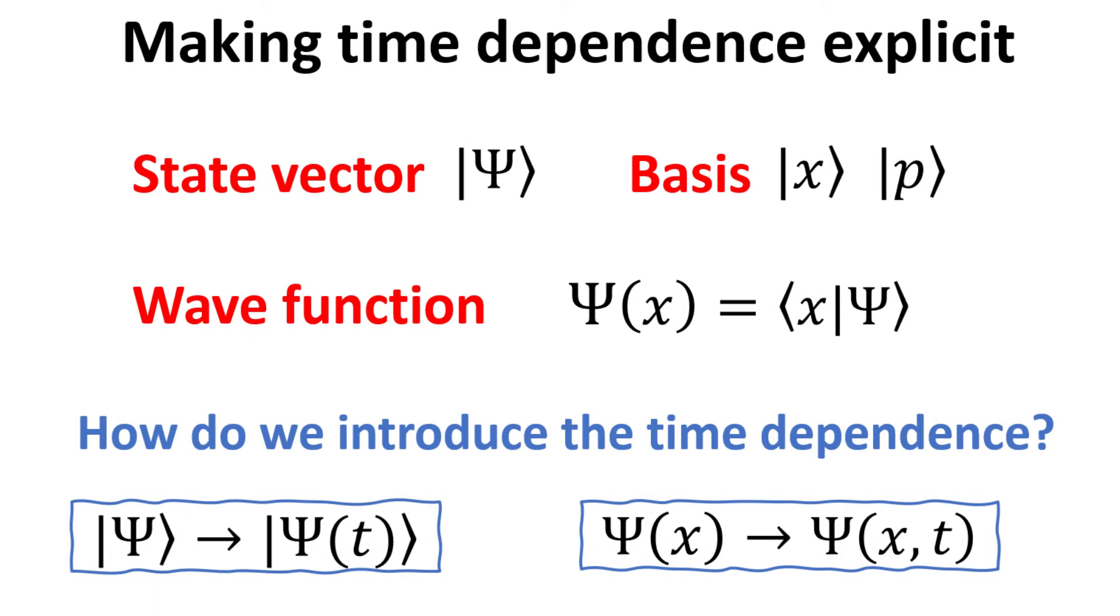We begin with the key quantities we discussed in the previous videos: the state vector ψ, the basis kets for position x and momentum p, and the wave function in position representation ψ(x), obtained by taking the bra of x with the ket ψ.